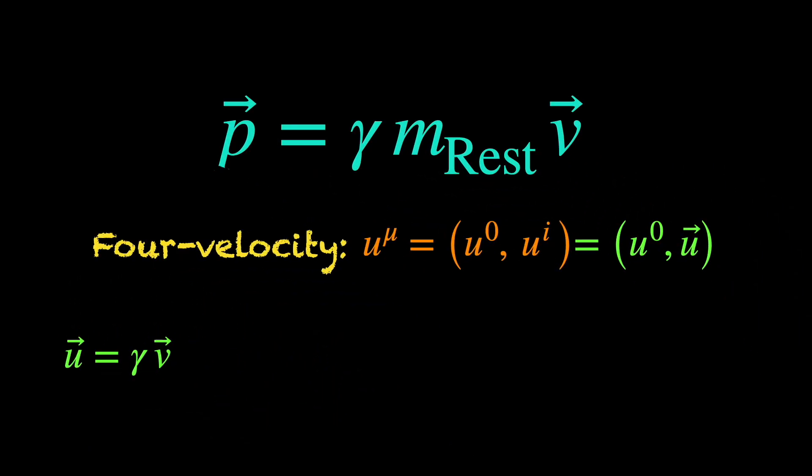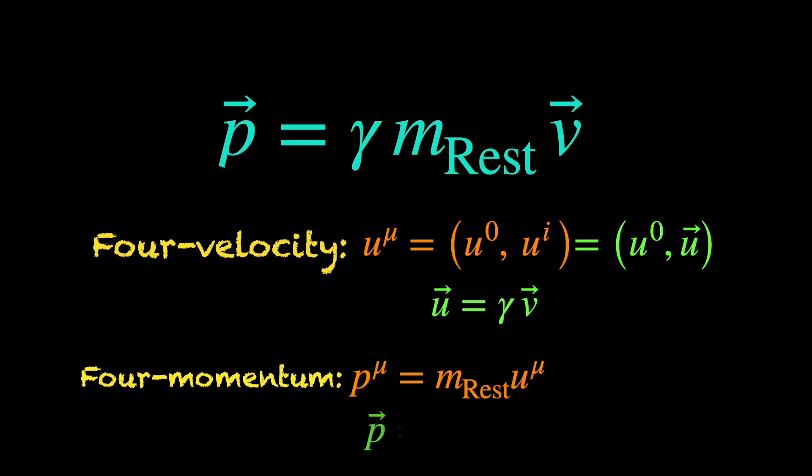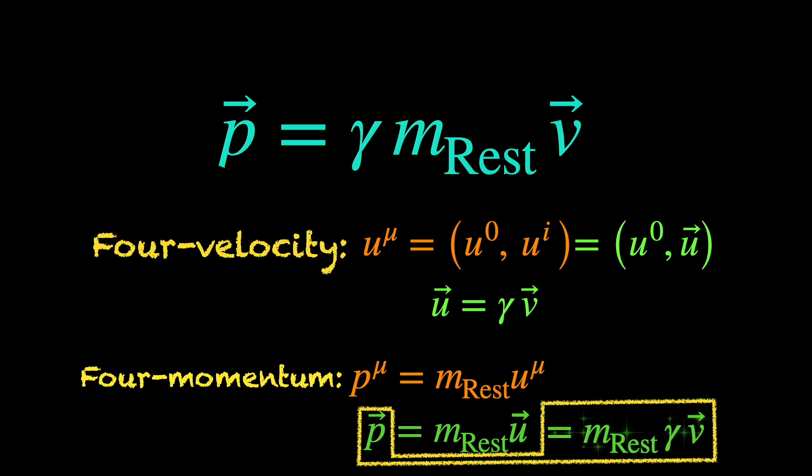Now, the 4-momentum is defined to be the rest mass times 4-velocity. So, its spatial part, the 3-dimensional vector p is obviously the rest mass times the spatial part of the 4-velocity, the u-vector which as you can see gives us the proper relativistic definition of a 3-dimensional momentum vector.